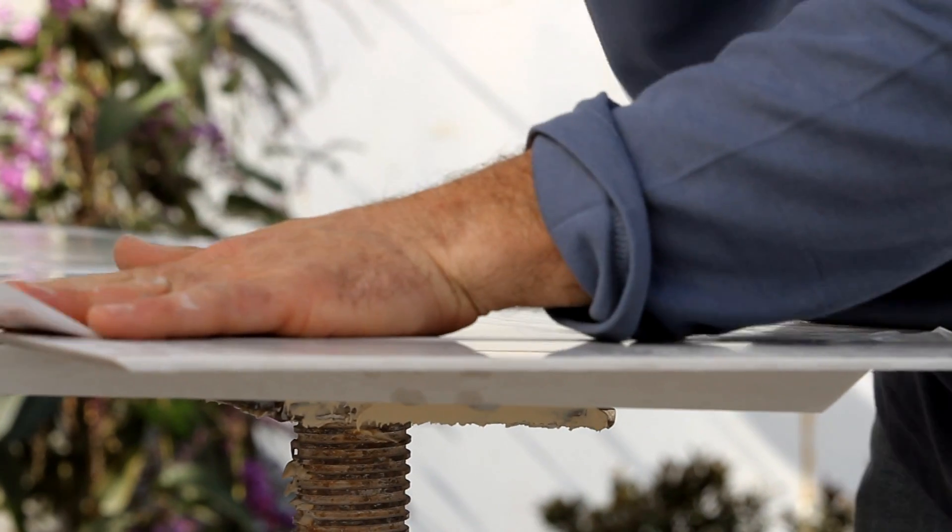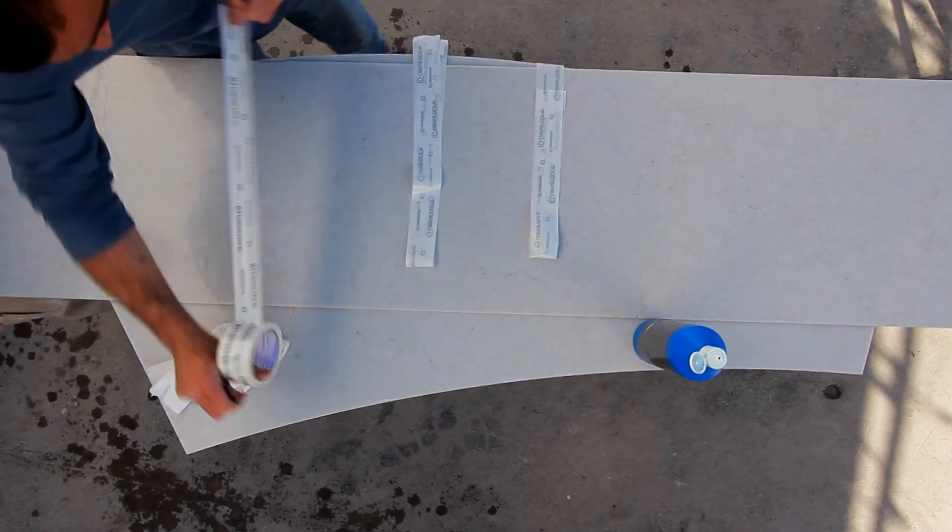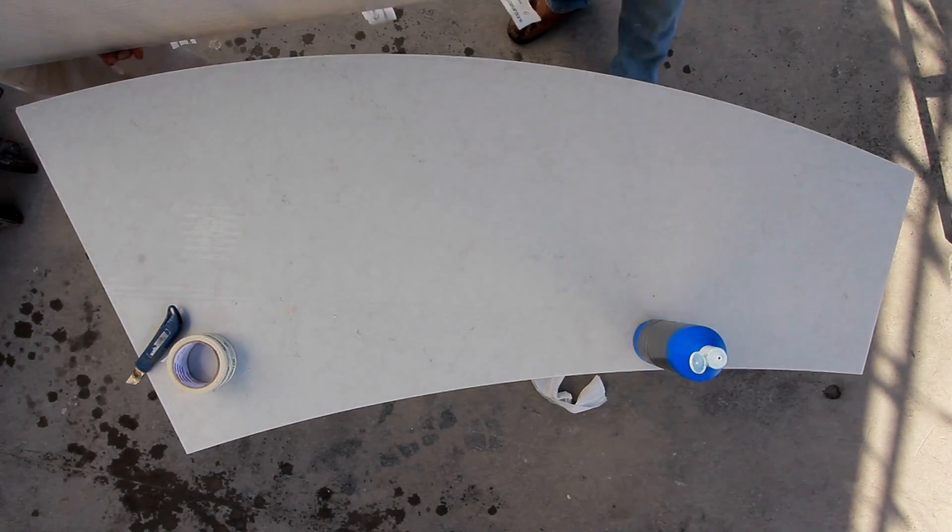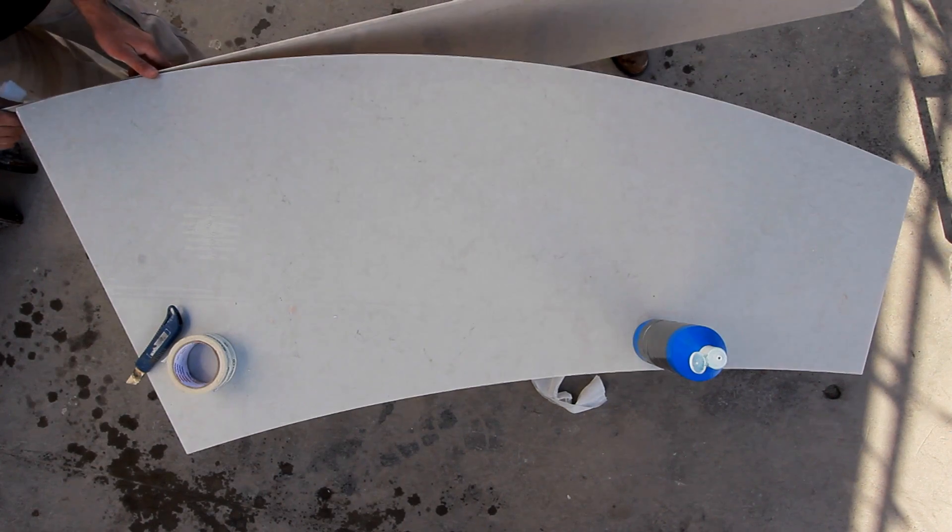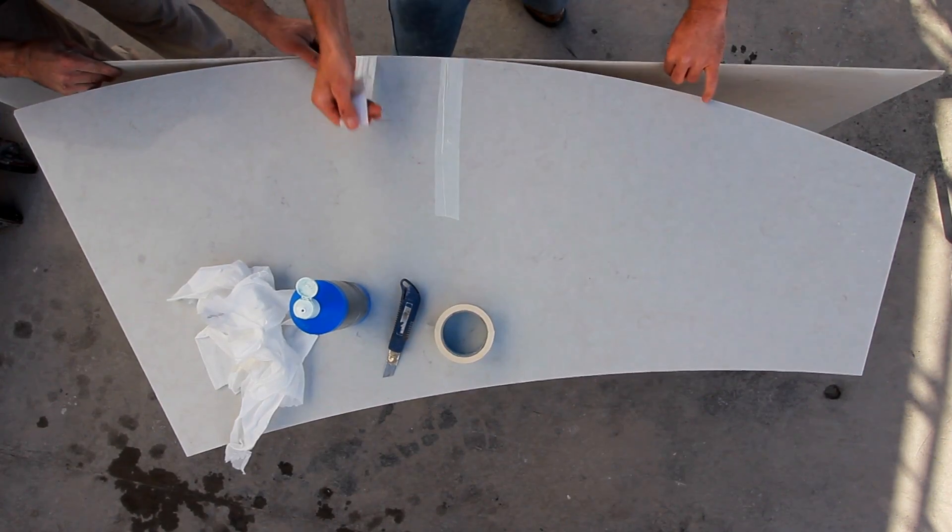Next, arrange strips of tape on the surface of the heated Caesarstone. Bend the Caesarstone around the edge of the coffee table until it takes on the correct shape and secure it with the strips of tape.